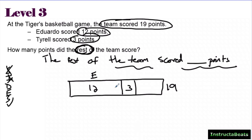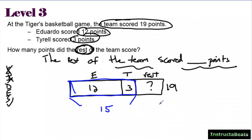I did my statement and my size check. Based on the information, I'm doing a part-whole model. I know the entire team scored 19. Eduardo scored 12 — that's labeled E. Tyrell scored three — three is a lot smaller than 12, so I make that piece smaller, because I'm showing the relationship between the numbers. The rest of the team scored some unknown amount. The first thing I want to do is combine what I know: 12 plus 3 is 15.